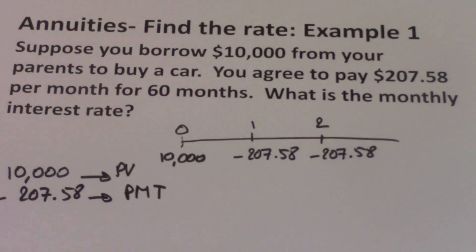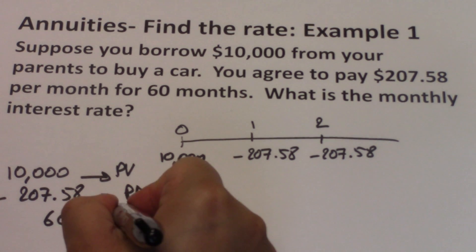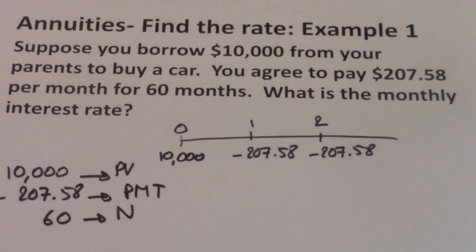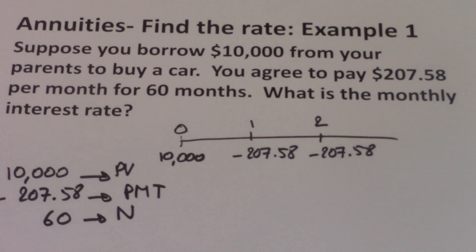You're paying this for 60 months, so N is 60. The payment is monthly and N is monthly, so when you compute for I/Y it's going to also be monthly.